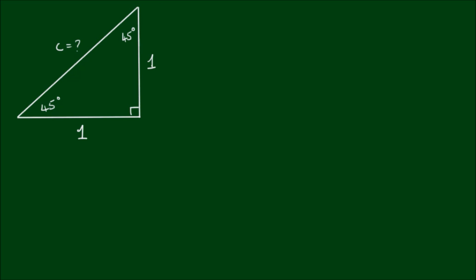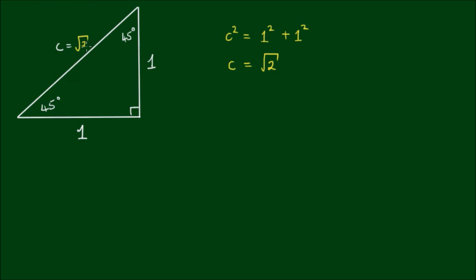We could give them any length we like, but a length of 1 unit is probably the most convenient. So we have an isosceles triangle with two equal sides. We need to work out the length of the longer side. And since this is a right-angle triangle, we can use Pythagoras' theorem to work this out. So c squared is equal to the sum of the two shorter sides squared, giving c squared equal to 2, and therefore c is equal to the square root of 2. So the hypotenuse has a length of root 2.